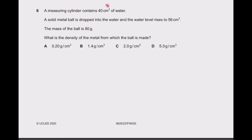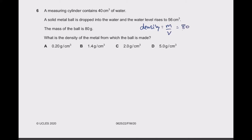Question 6: a measuring cylinder has 40 cm³ of water. A solid metal ball is dropped and the level rises to 56 cm³. The mass is 80 grams and we have to calculate the density. Density equals mass divided by volume. Mass is 80 grams; displaced volume is 56 minus 40, which is 16 cm³. So 80 divided by 16 gives 5 grams per centimeter cubed.